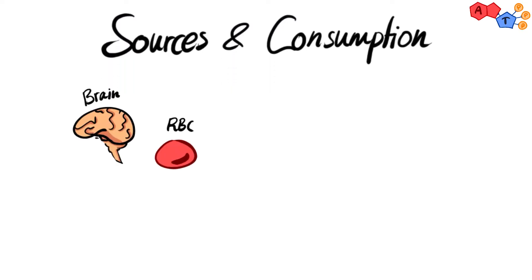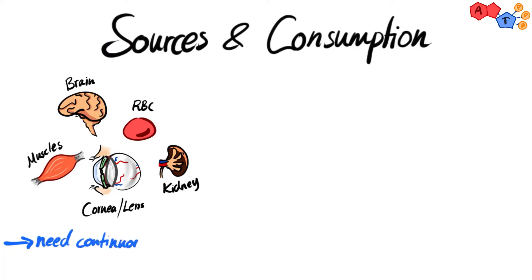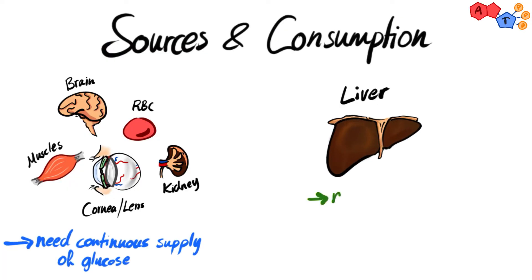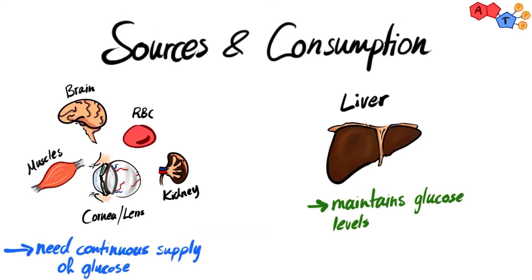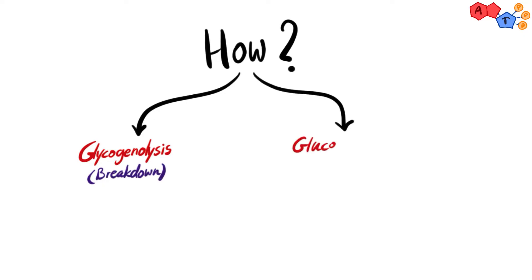The brain, red blood cells, kidney medulla, lens, cornea, testes, and exercising muscles need a continuous supply of glucose to remain functional. The liver is responsible for maintaining blood glucose levels to ensure these organs get the glucose they need. This is achieved by two important processes: glycogenolysis, which is the breakdown of glycogen, and gluconeogenesis, which is the production of new glucose — hence the word 'neo' — and this is our topic for today.